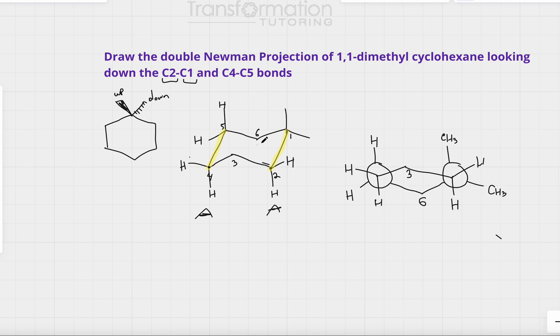And similarly, carbon 1 is connected to carbon 6 as well. So this is a more complicated Newman projection. But if you do it step by step like I did, it should make sense. Let me know if you have any questions. And let me know what you're working on in your organic chemistry class right now.